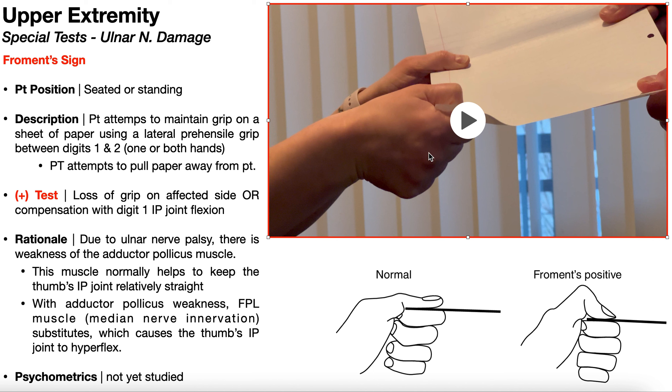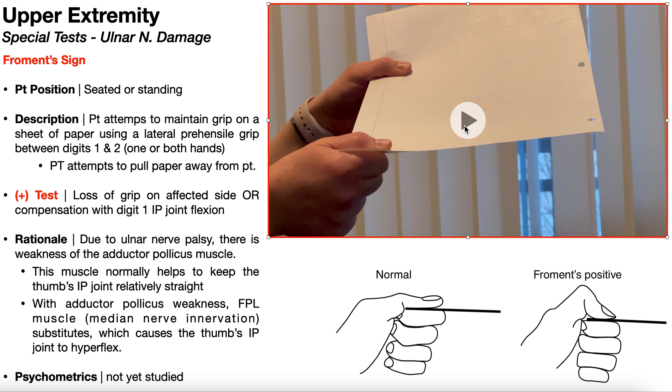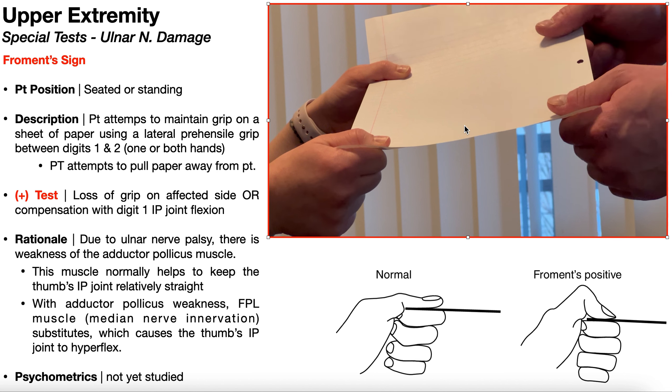So a positive test here can be one of two things. Either a total loss of grip on the affected side, meaning that on the right side here, the paper would have come completely out of her grip. She would have lost it totally, which didn't happen. Or what did happen is that compensation with digit one or thumb interphalangeal joint flexion, which is Froment's sign.